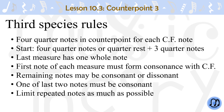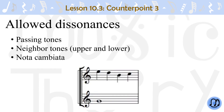The first note of each measure must form a consonance with the Cantus firmus. The remaining notes may be consonant or dissonant. One of the last two notes of each measure must be consonant. Try to limit repeated notes as much as possible. The allowed types of dissonances in third species are passing tones, upper and lower neighbor tones, and the nota cambiata.